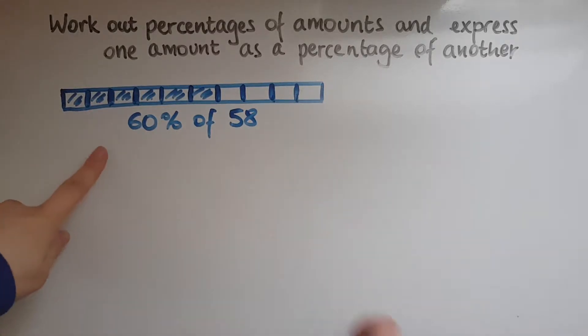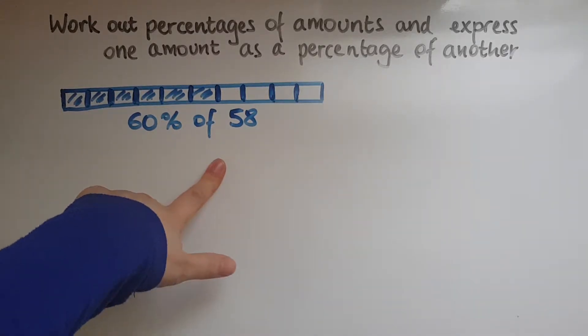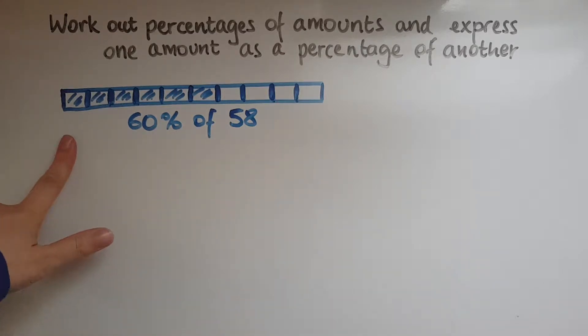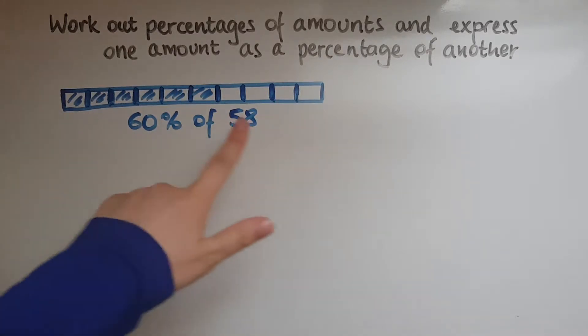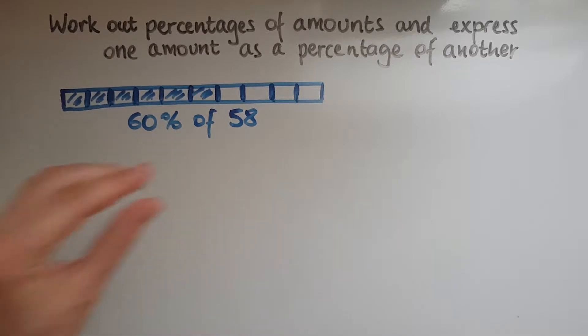I've represented here 60% of 58. As you can see, I've split 58 into 10 equal parts and I've highlighted 6 of them because that represents 60% of 58 in this case.